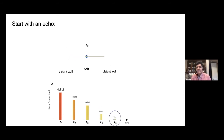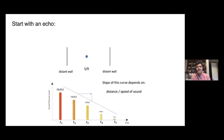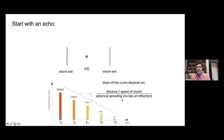These successive bounces get lower and lower in amplitude because of spherical spreading, and we would perceive that as individual echoes — hello, hello, hello. At some point, that same phenomenon merges into what we think of as reverberation in our perception. The slope of this curve depends upon the distance the sound travels and the speed of sound, and also upon how the amplitude is changing, in this case only due to spherical spreading. Our perception of reverb in this situation is dependent on just those two things.